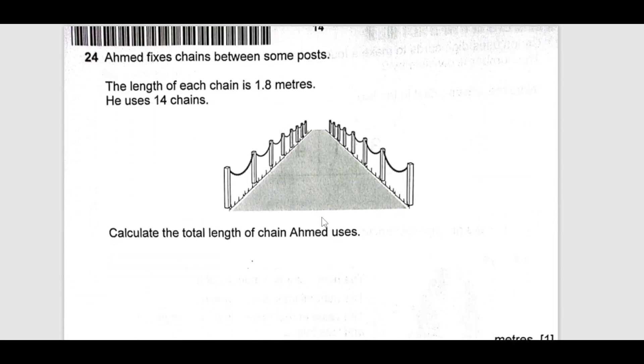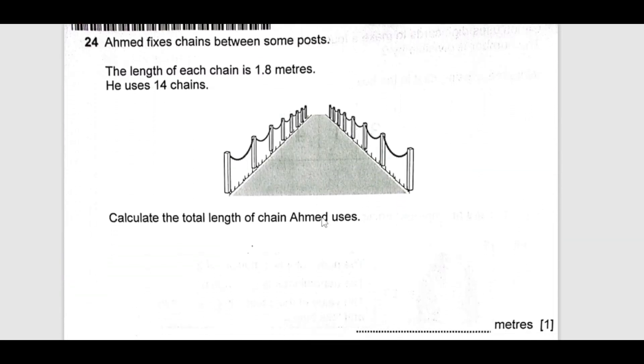Number 24, Amad fixes a chain between some posts. The length of each chain is 1.8 meters. He uses 14 chains. Calculate the total length. It's very simple. 1.8 is one length and we have 14 such. If you multiply this, you are going to get 25.2. That is the final answer. It's just multiplication, you can easily do that.